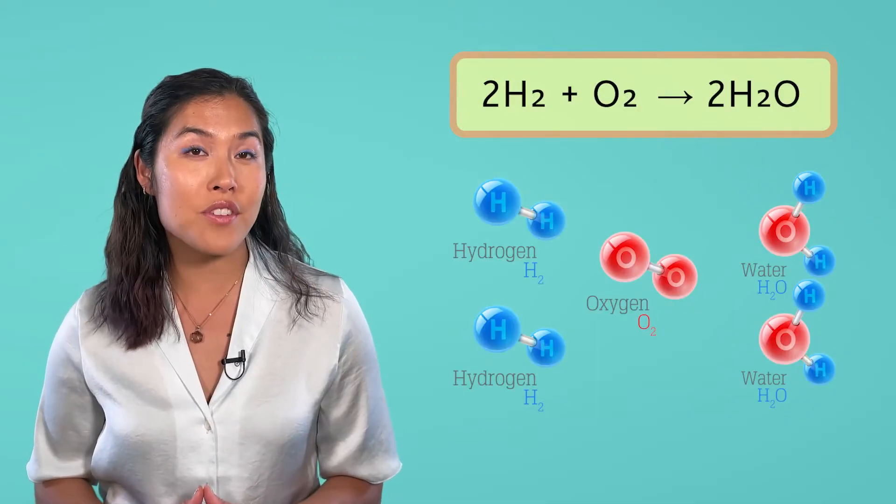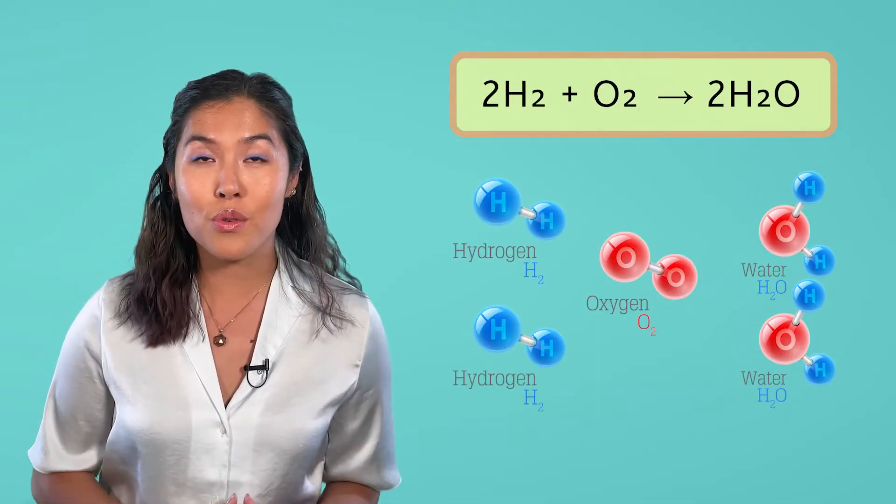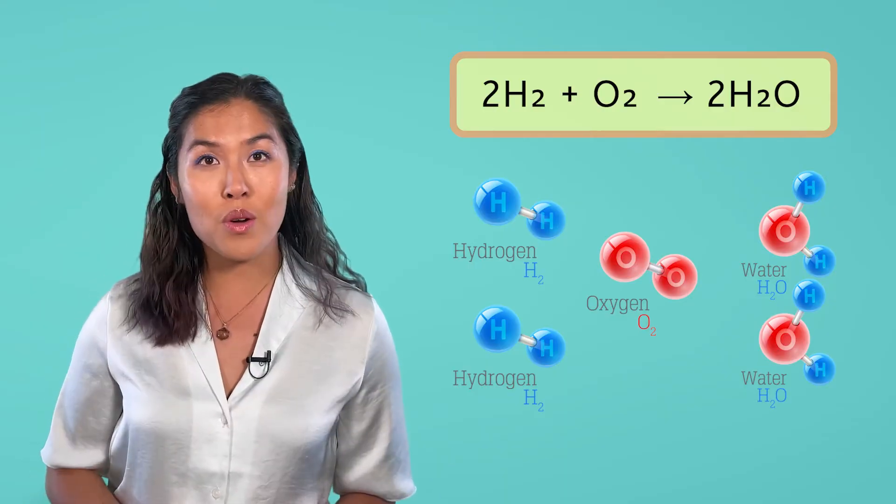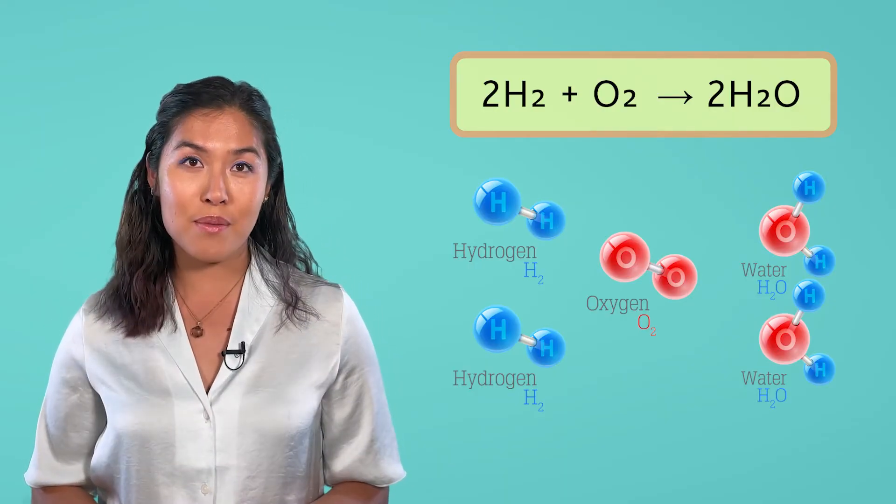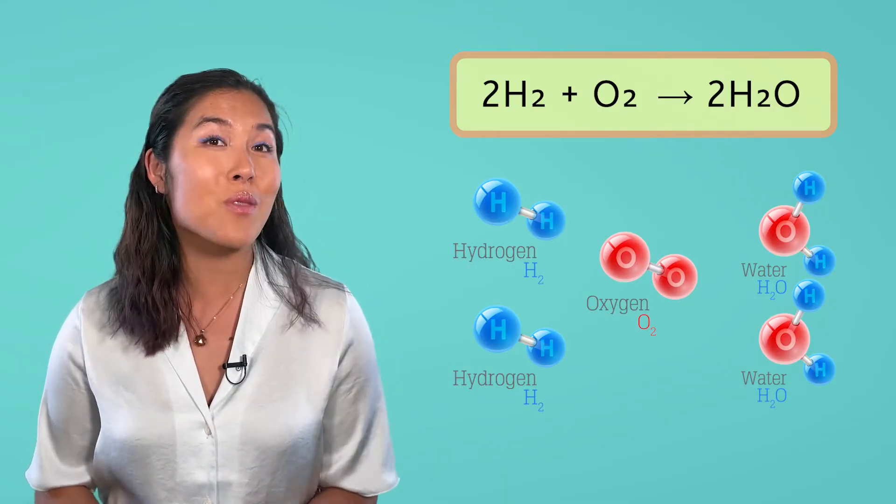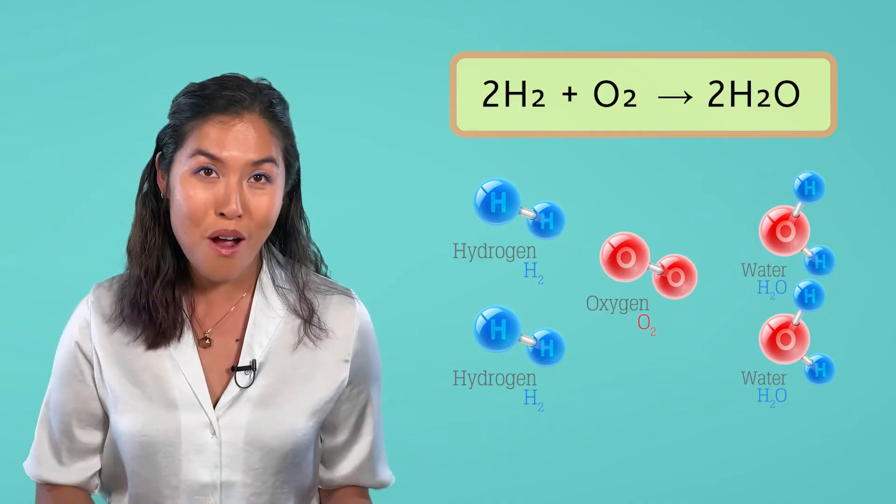For example, in the chemical equation 2H2 plus O2 yields 2H2O, you have four hydrogen atoms and two oxygen atoms in the reactants and products.